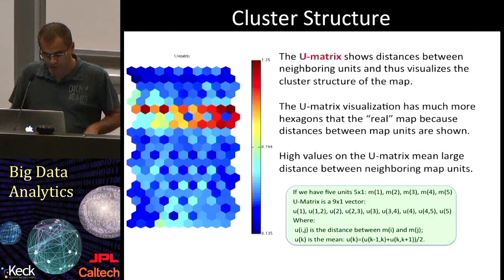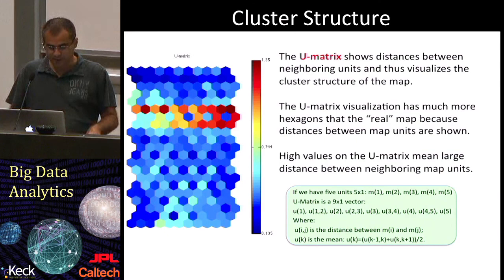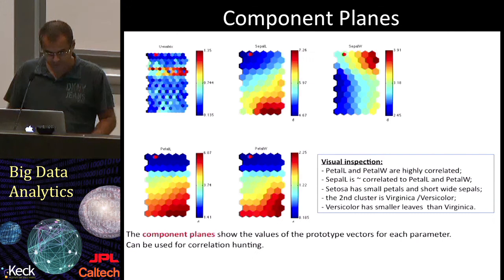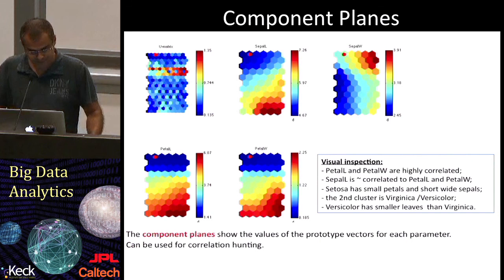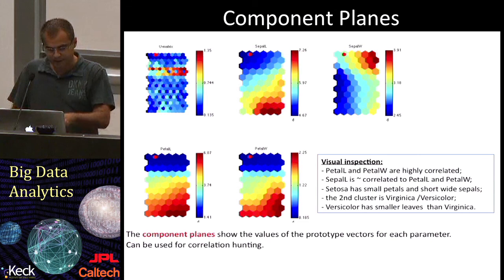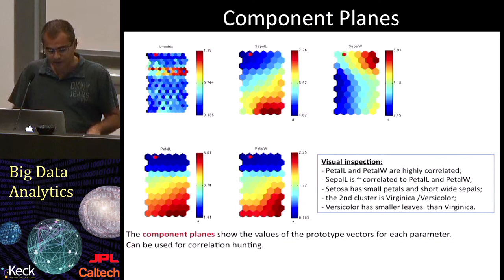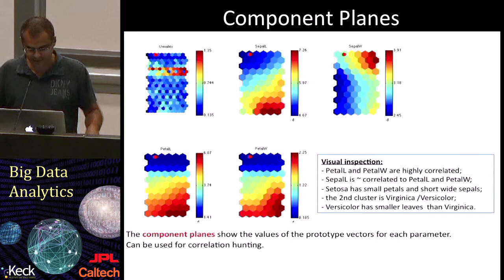To show the cluster structure, we can use a unified distance matrix, or U-matrix, that shows distances between neighboring units. This visualization has many more units than the real map because the distances between map units are also shown. With self-organizing maps, we can also visualize the map parameter by parameter using component planes, which show the values of the prototype vector for each parameter and can be used for correlation hunting. For example, we have the U-matrix and then the four component planes, and from this dataset we can easily see that the two bottom planes are highly correlated, and we can also infer other properties regarding the IRIS dataset.